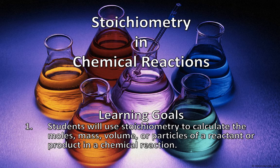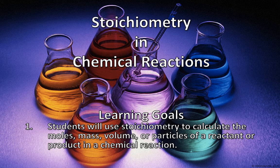What we can do with stoichiometry, as you look at the learning goal there, is it allows us to calculate the relationship between the amount of a reactant or the amount of a product that we have in any given chemical reaction. When we talk about amount, there are many different ways that we can measure it — we can measure the amount in moles, in mass measured in grams, volume measured in liters or cubic decimeters, or particles, which could be either atoms or molecules. In this particular lesson, we're going to learn how to relate reactants with products in either direction — how much of a product is produced, or how much of a reactant is required for a particular chemical reaction.